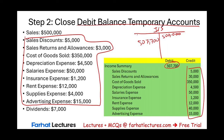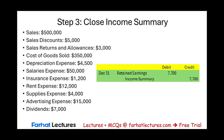Step three is close income summary. I have more expenses and debit balances than credit balance — a difference of 7,700. A debit balance means the company is at a loss. The company incurred a loss of 7,700 in this example. Since we have a debit balance in income summary, we are going to credit income summary and debit retained earnings. Retained earnings is going down, and this makes sense because the 7,700 is a loss.